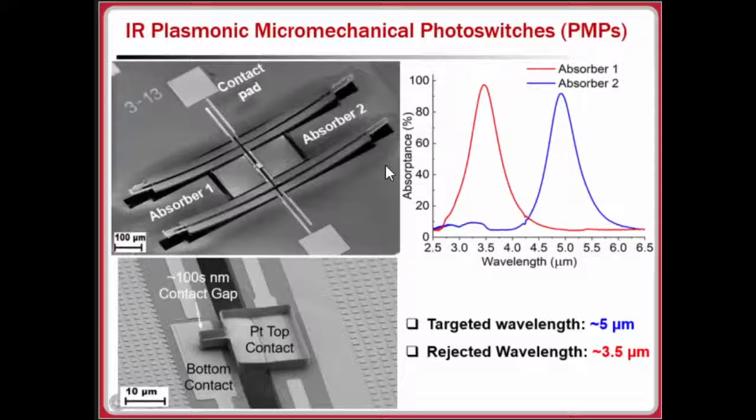Shown here is the actual fabricated device. It has two absorbers on either side and the right side has larger square patches with an absorption spectrum shown in this blue curve at around 5 micron. The other side has an absorption at around 3.5 micron. The device is designed to turn on for above threshold infrared radiation at 5 micron, while it's designed to reject any wavelength close to 3.5 micron.